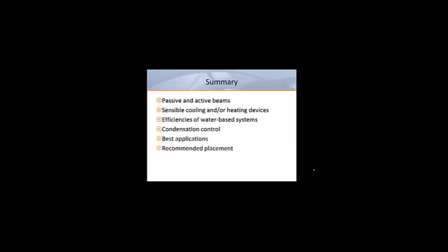In summary, we've explained what passive and active beams are. We've discussed how they can be used to provide sensible cooling and heating. We've looked at the efficiencies of water-based systems in comparison to all air systems and how to prevent accidental condensation. We also looked at the best chilled beam applications and the proper placement of these devices.